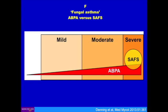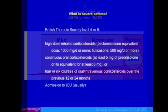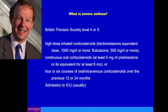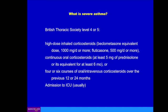SAFS, by definition, occurs in patients with severe asthma, and it overlaps with ABPA. If you try to define severe asthma, it's actually quite difficult. It's usually defined by treatment — requiring high-dose inhaled steroids, continuous oral steroids, or multiple steroid courses, and occasionally by needing intensive care. The problem with ABPA and severe asthma is that we treat ABPA with steroids, so by default those patients become severe, even though their asthma may not be badly controlled in itself.